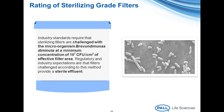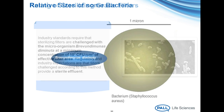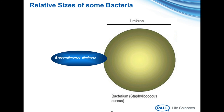Brevundimonas diminuta, often called B. dim, is a very small gram-negative rod bacteria. It was chosen as a reference test organism due to its ubiquity, its small size, and the ease of culture. It's important to use a test organism that is small, but also one that is easily cultured so you can be sure you can detect it if it does get through the filter. This slide also shows how it compares in size relative to some common pathogens.